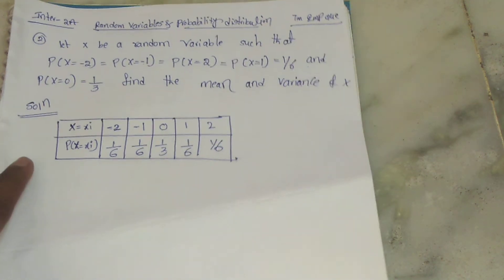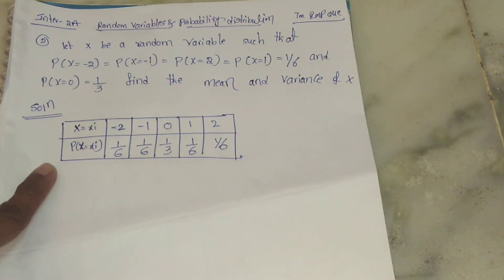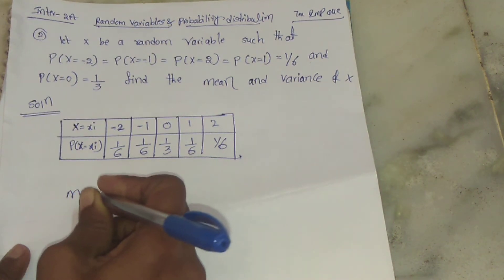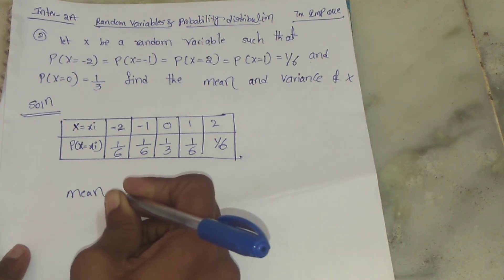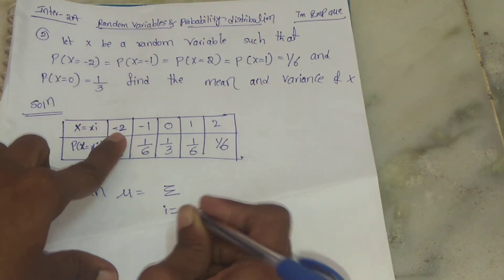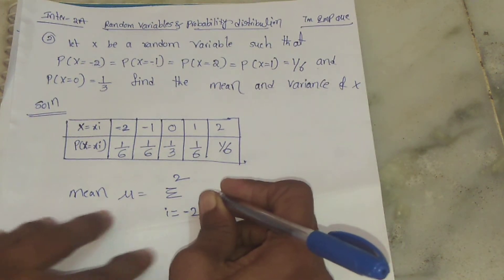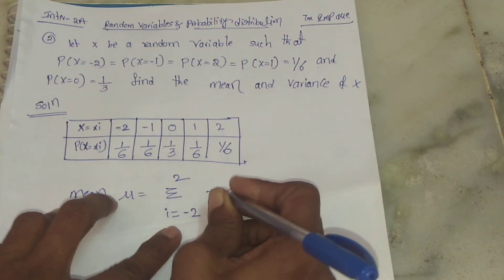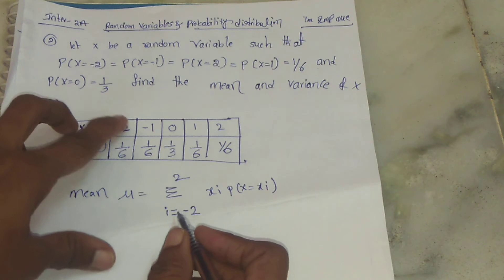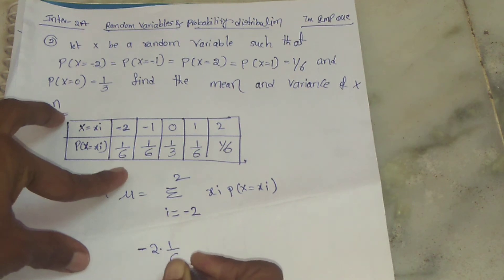Now we have the data arranged in a table. Let's find the mean and variance. The mean formula is: μ = Σ (from i = -2 to 2) of x_i × P(X = x_i). We multiply each x_i value by its corresponding probability.